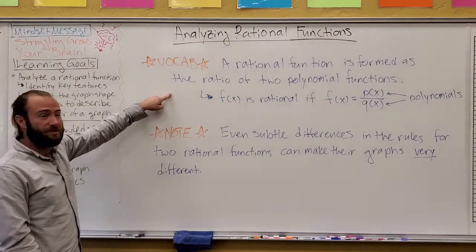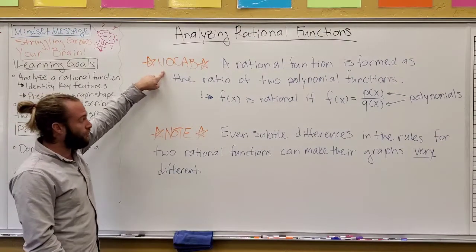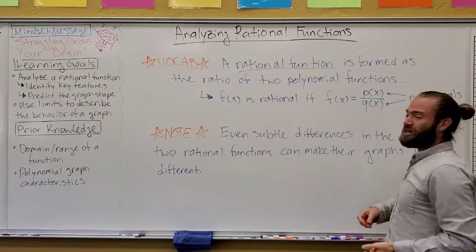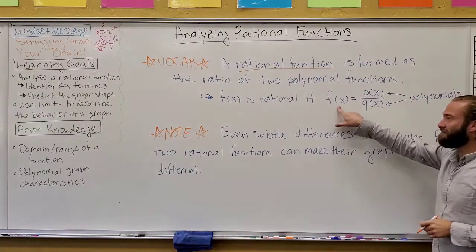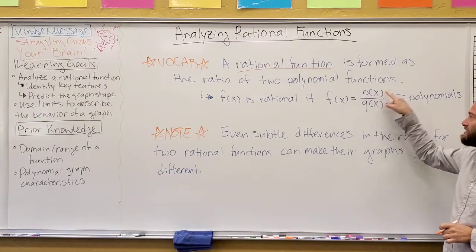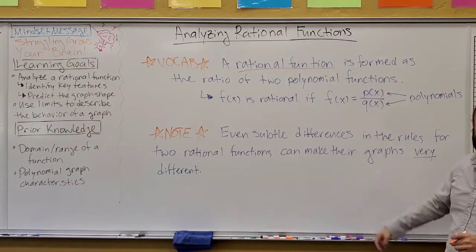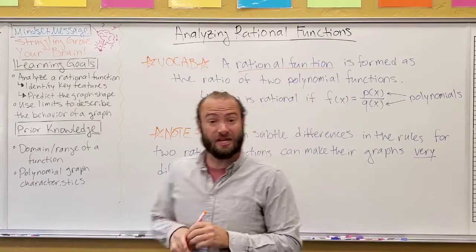So the first thing to jump into is a vocabulary word. A rational function is simply the ratio of two polynomials. So if you have a function that's rational f of x, then it's going to be p of x over q of x, where those two separate things are themselves polynomials.